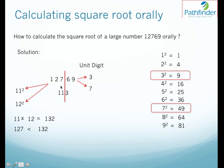So we can say that the square root of 12769 is 113. So you see how easily we could calculate the square root of perfect squares, even large perfect squares orally.